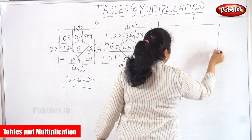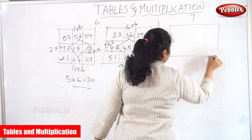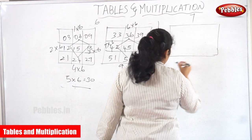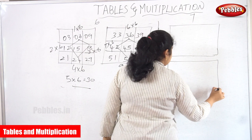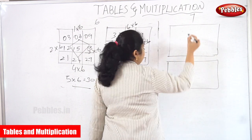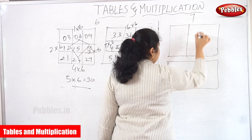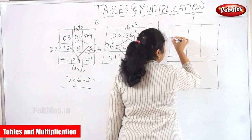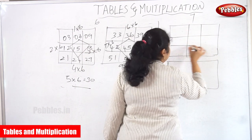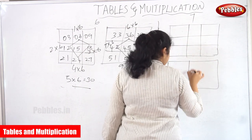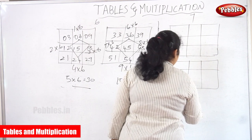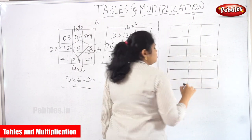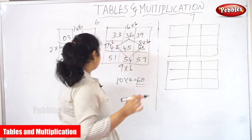As like the 6th table, here also I am going to make a 2-square grid like this, with a standing line and sleeping line.